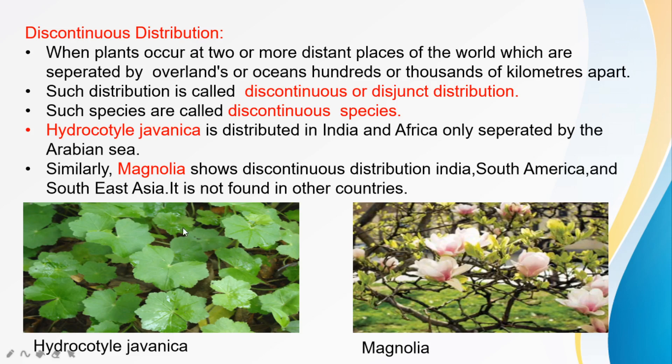Similarly, Magnolia also shows discontinuous distribution in India, South America, and South East Asia. It is not found in other countries. We call this discontinuous distribution.